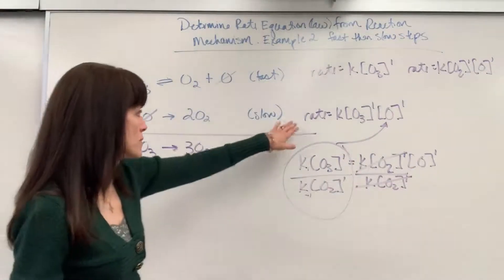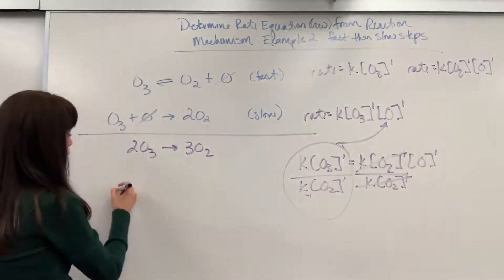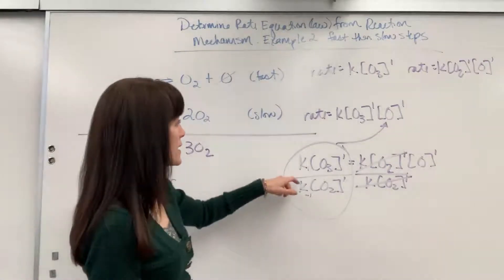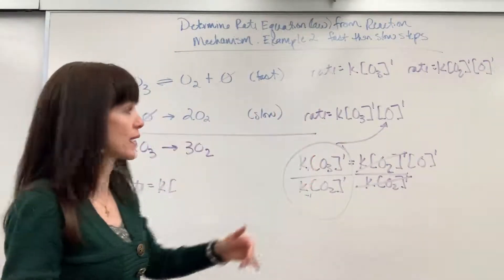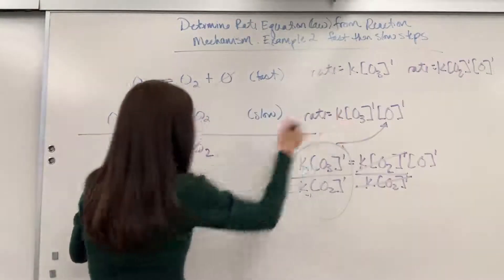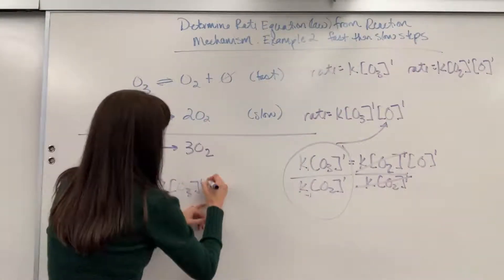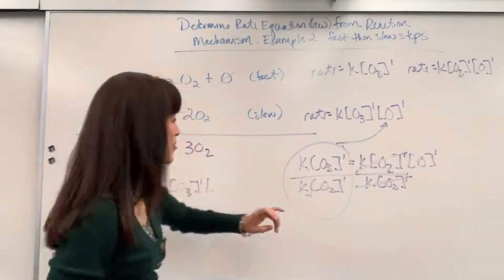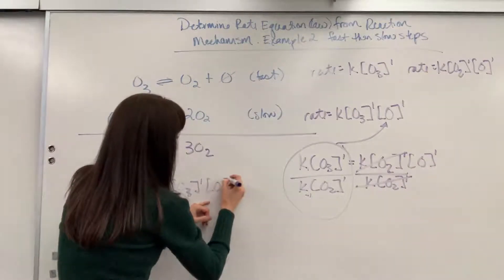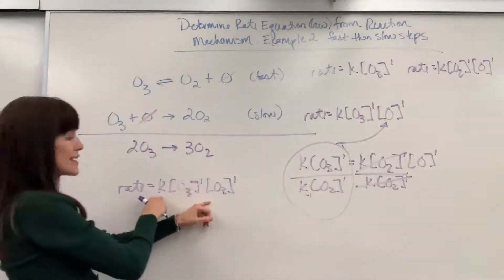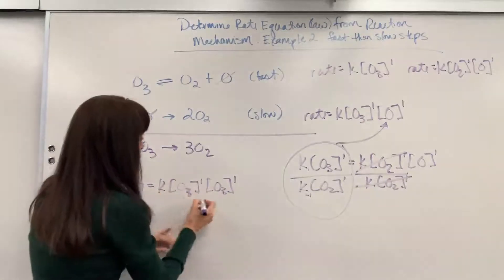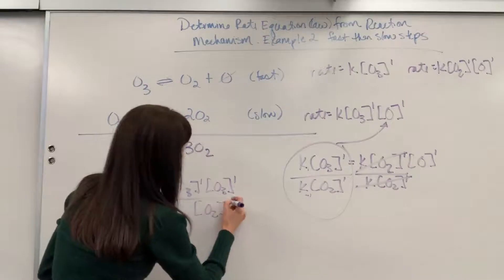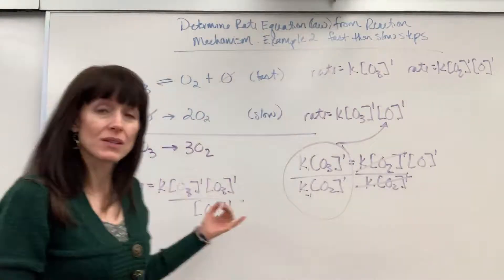So let's go ahead and substitute. I'm going to rewrite this. We will have rate equals K. And remember, this K and K times that just is going to be some value K. So we have our Ozone still, O3 to the first order. And then right here, I'm going to plug that in, substitute for the O. We are going to have O3 to the 1. And remember, those Ks just end up buried in that value of K. All divided by the O2, which is also to the first order.